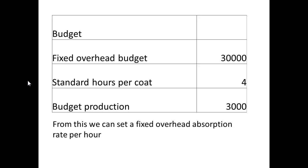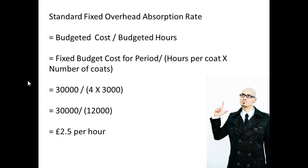Our budget was dependent on producing 3,000 coats at four hours per coat, giving us a fixed overhead budget of £30,000. With those details we can set a fixed overhead absorption rate per hour. We divide the budgeted cost by the budgeted hours: £30,000 divided by 4 times 3,000 — that's 30,000 over 12,000 — which gives £2.50 per hour. That is our absorption rate: £2.50 per hour.